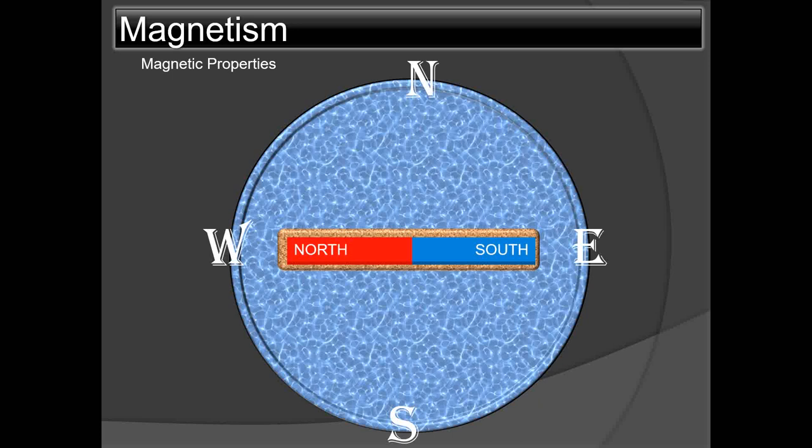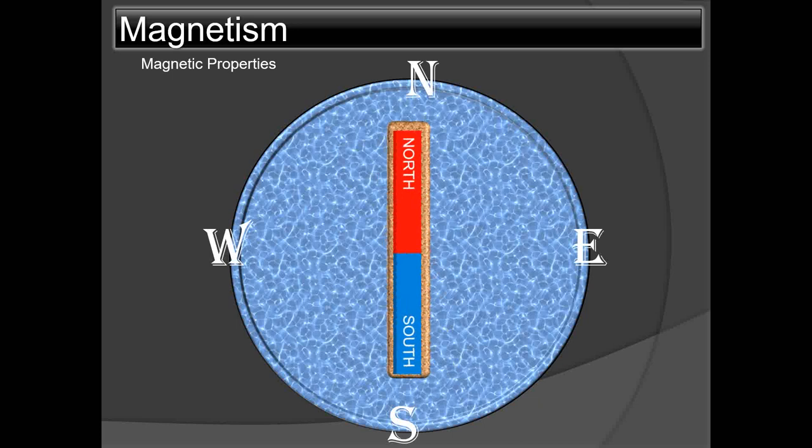A magnetic bar, if suspended freely, will align itself with the magnetic lines of force and point towards the magnetic north. Although the figure may show the magnetic north in the same direction as true north, that may not always be the case. True north is 000 degrees — a fictional reference point used for direction keeping and course measurement. Magnetic north depends on the Earth's magnetic pole, which keeps changing due to changes in the Earth's core, so the magnetic needle always points towards magnetic north, which is not always 000 degrees.